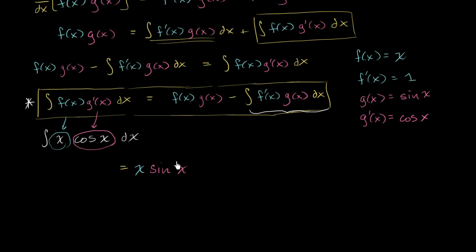And then from that, we are going to subtract the antiderivative of f'(x), well, that's just 1, times g(x) times sine of x dx.